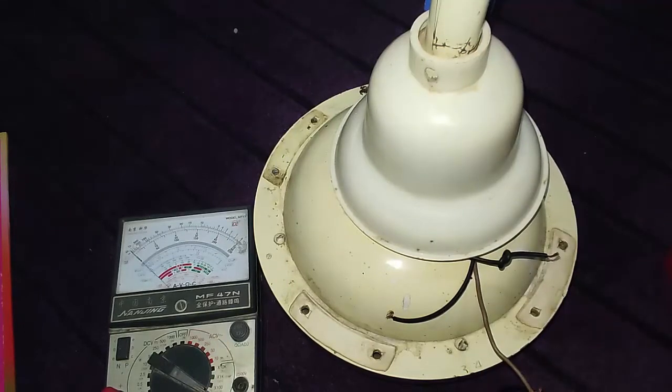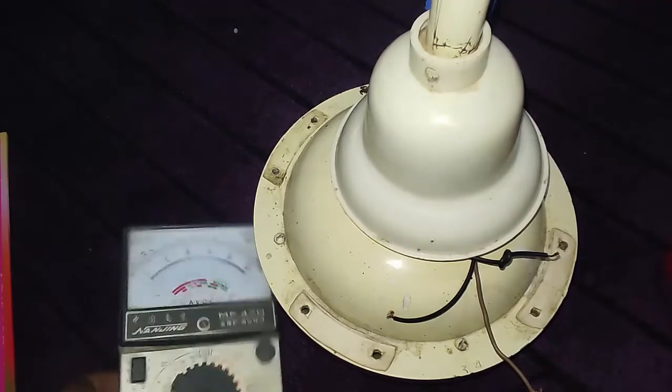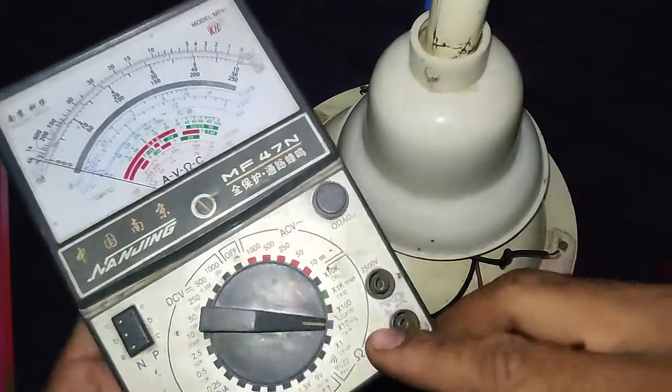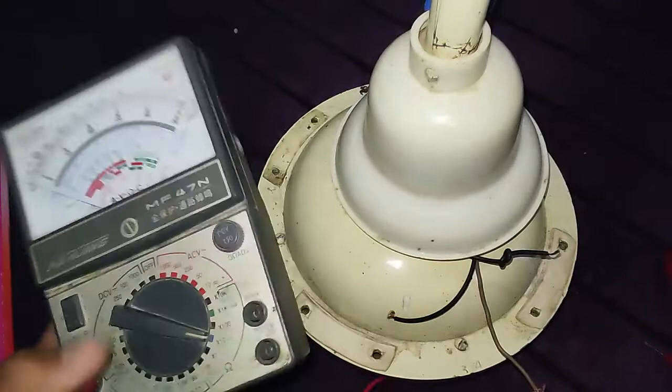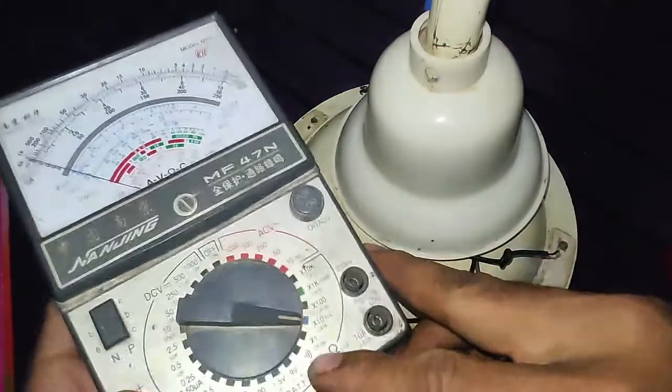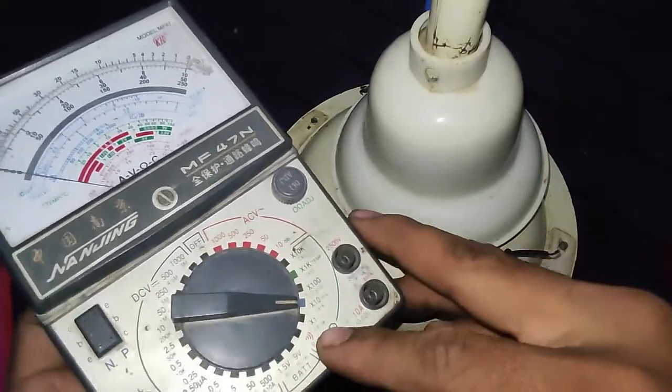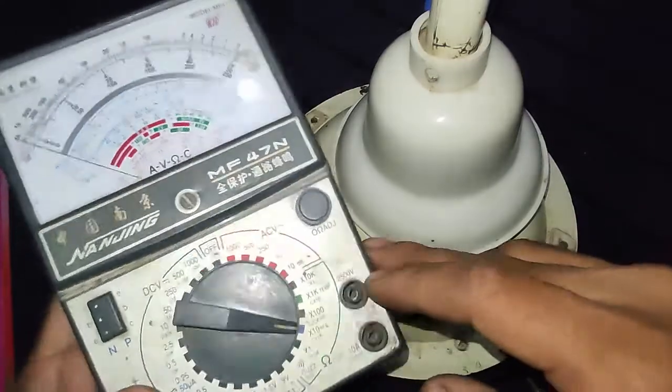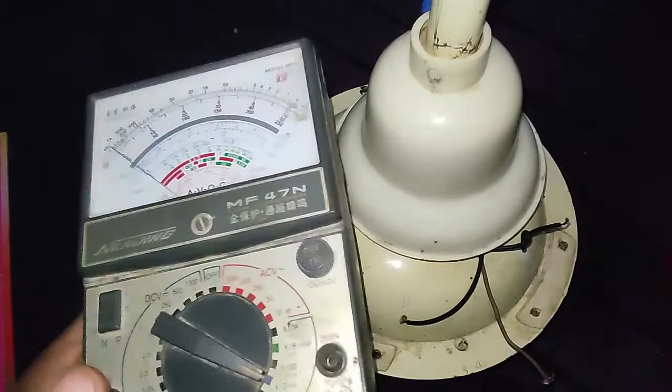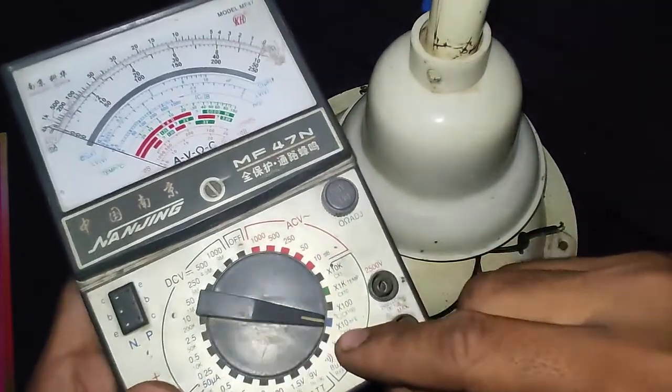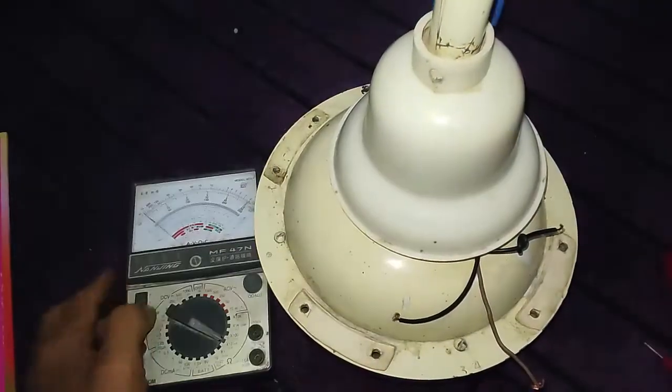First of all, I will set this multimeter on ohm testing. I have different connections, so I will set this multimeter on ohm testing and I have different testing modes: x1, x10, x100. For this type of testing, because the winding resistance will be high, I need to test with x10, so I will set on x10 mode.